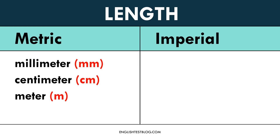The meter is used to measure a wide range of everyday distances, such as the length of a room. One meter equals 100 centimeters or 1,000 millimeters. The kilometer is used to measure longer distances, such as the length of a road or the distance between cities. One kilometer is equal to 1,000 meters.